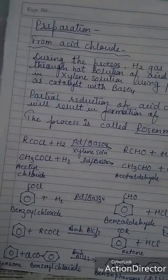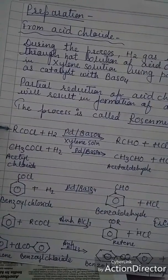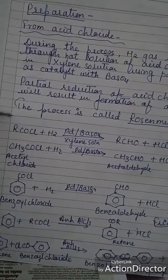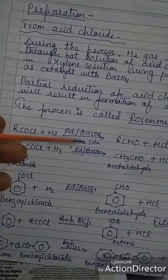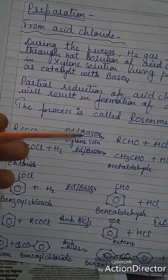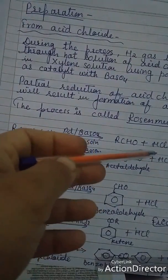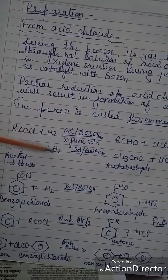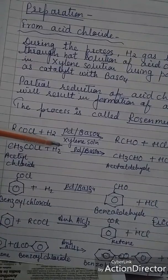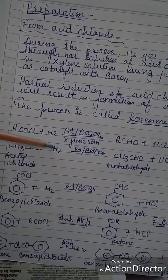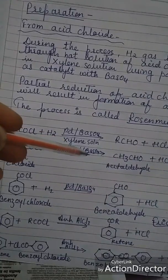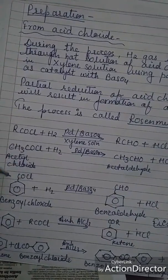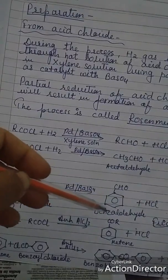Now let us come to the preparation of aldehydes. They can be prepared from acid chloride. Hydrogen gas is passed through the hot solution of acid chloride in xylene using palladium and barium sulfate as a catalyst. You will get the aldehyde and HCl. For example, acetyl chloride gives acetaldehyde and HCl. Since benzoyl chloride is taken here, it will give benzaldehyde and HCl.